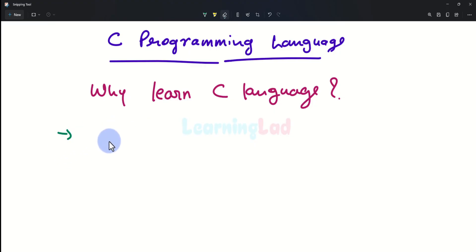Now once you know C programming language, learning other programming languages will be easy. For example, once you know C, you can easily learn C++, Java, C sharp, or even Python.